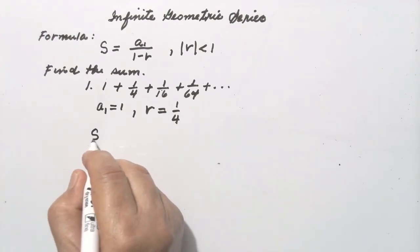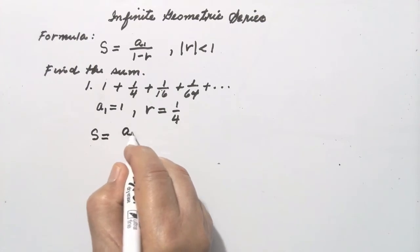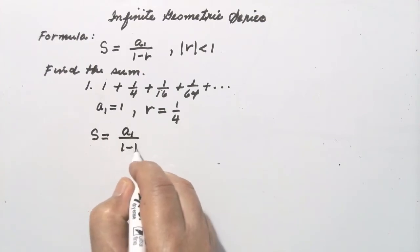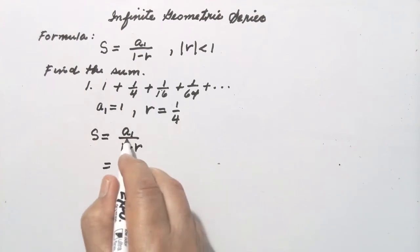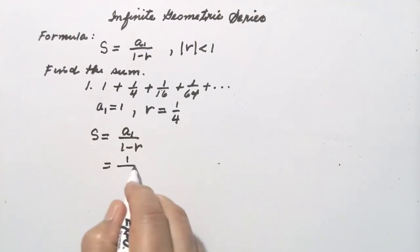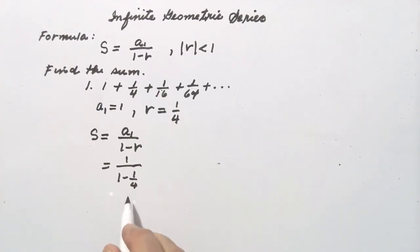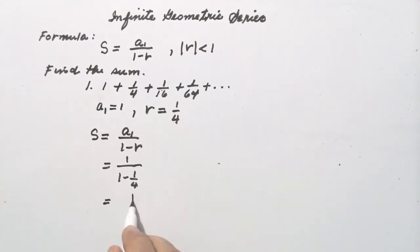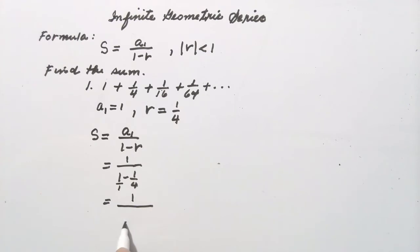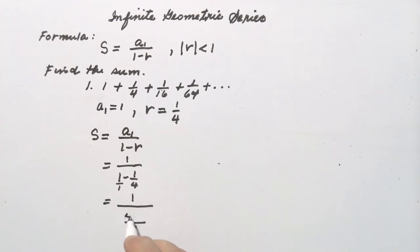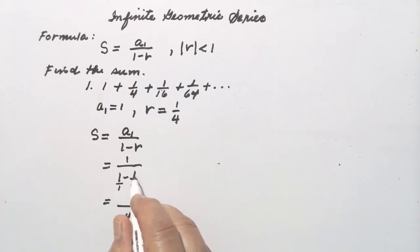So, the formula is S is equal to a sub 1 over 1 minus r. Just substitute: 1 over 1 minus 1/4. Simplifying the denominator — it is understood that 1 is over 1 — so: 4 divided by 1 is 4 times 1 equals 4, minus 4 divided by 4 equals 1 times 1, which is 1.